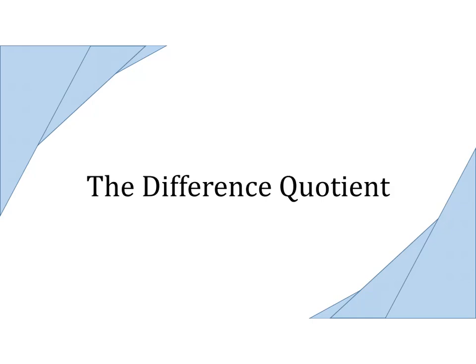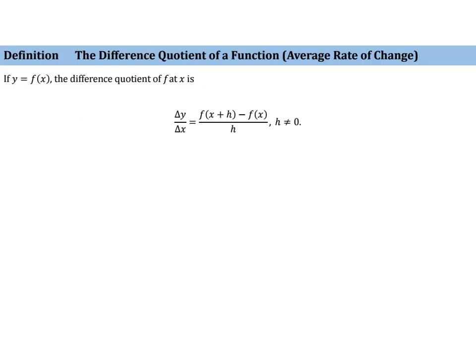Now we can look at something called the difference quotient of a function. The difference quotient gives the average rate of change of a function. If y equals f of x, then delta y over delta x — which you may know as the slope or the average rate of change — is given by the second y value minus the first y value, all over the second x value minus the first x value.